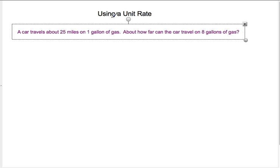And the last problem, we're going to talk about using unit rate. So if a car travels about 25 miles on one gallon of gas, about how far can the car travel on 8 gallons of gas? Well, if it goes 25 in one gallon, 25 miles in one, using one gallon.